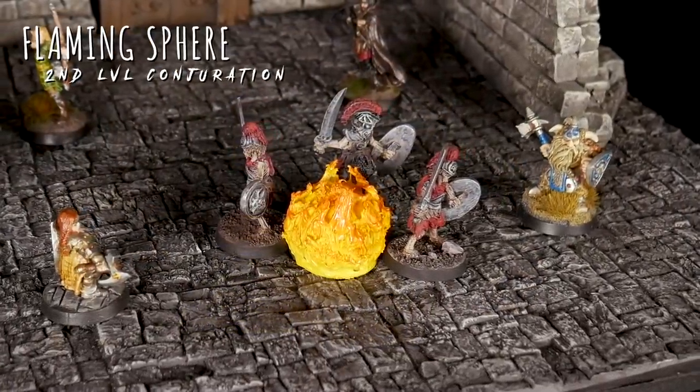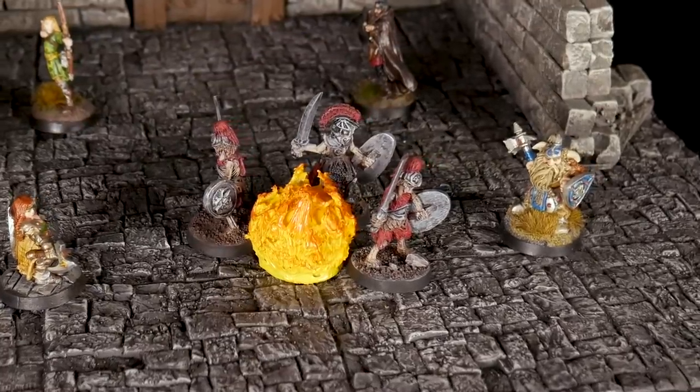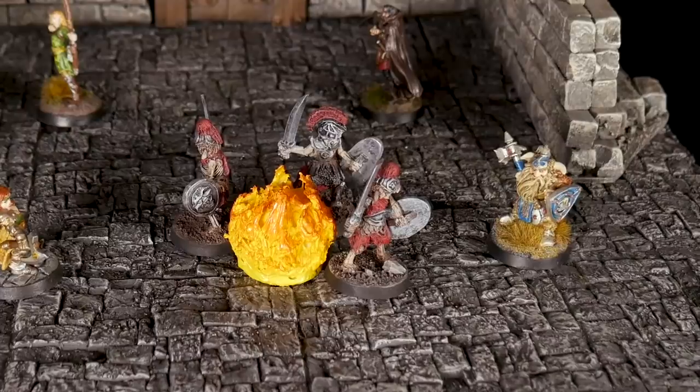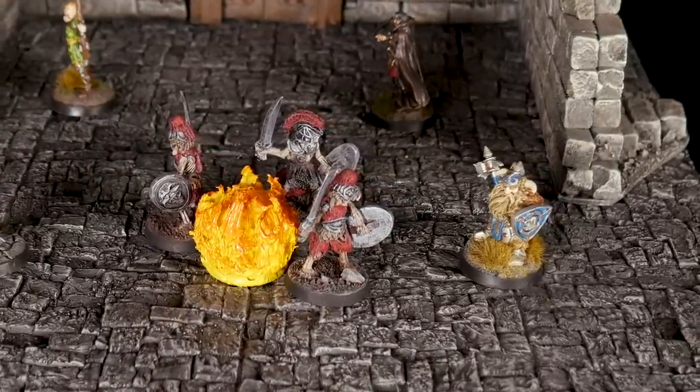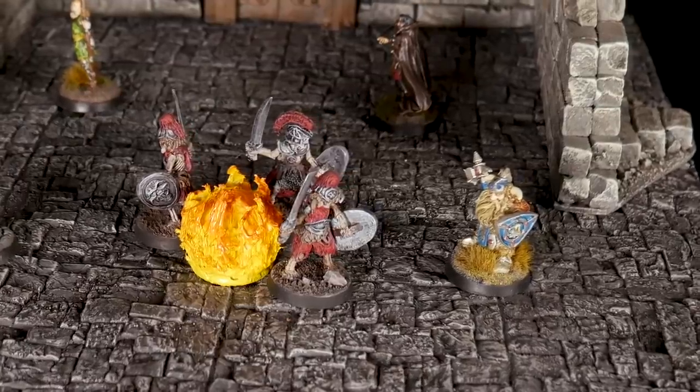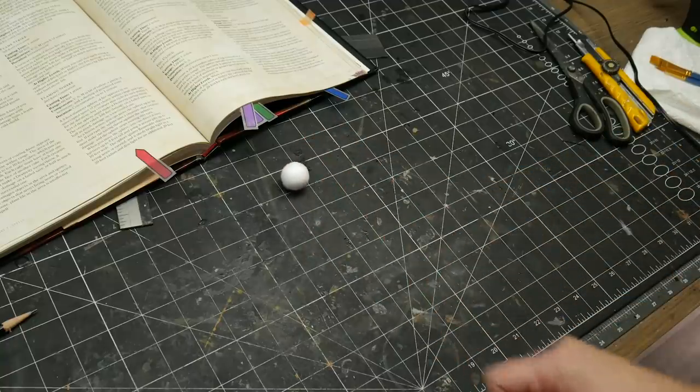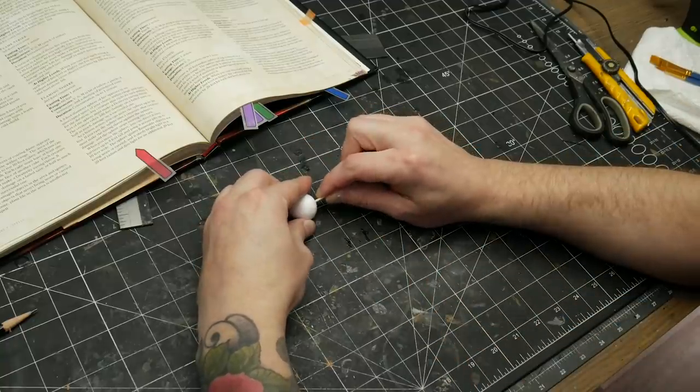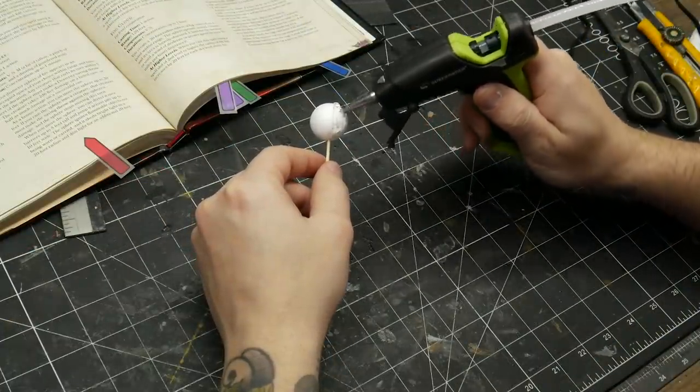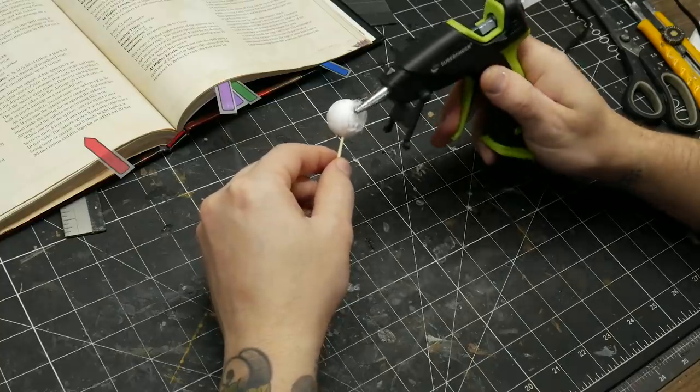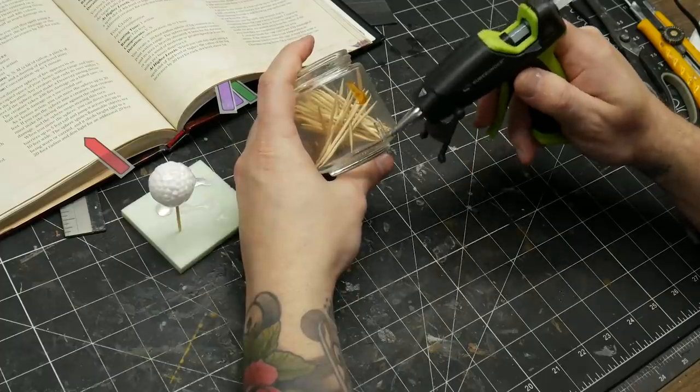Flaming Sphere! A 5-foot diameter sphere of fire appears in an unoccupied space. Any creature that ends its turn within 5 feet of the sphere must make a dexterity saving throw. The creature takes 2d6 fire damage on a fail and half on a success. As a bonus action, you can move the sphere up to 30 feet. I had the perfect size styrofoam ball to start with on this one. You can buy these in various sizes from craft stores or places like Dollarama. I've got a collection that I don't use often, but they sure do come in handy when I need one. I created a handle with a toothpick and set to work coating the whole ball in a layer of hot glue.